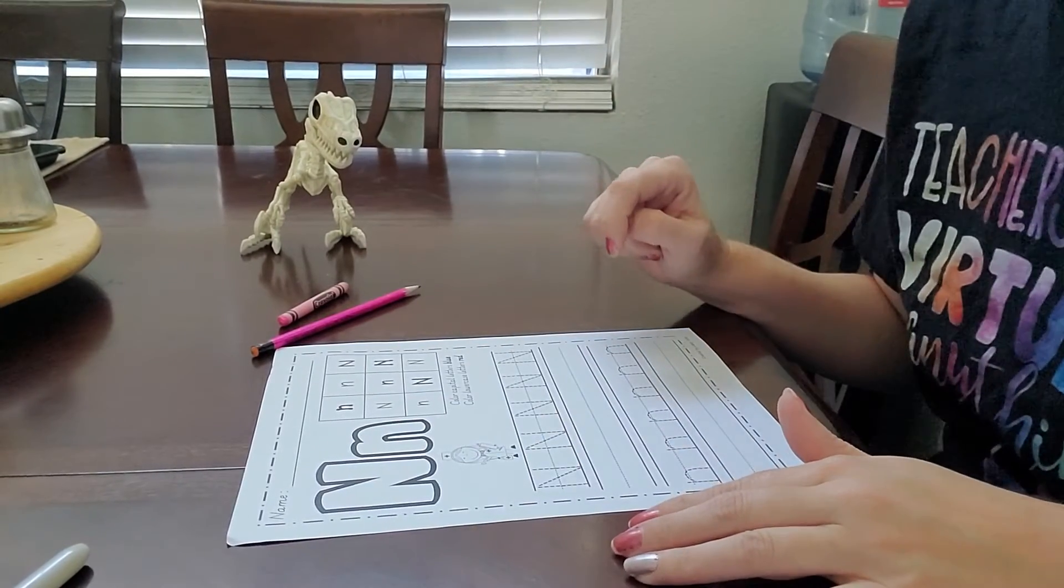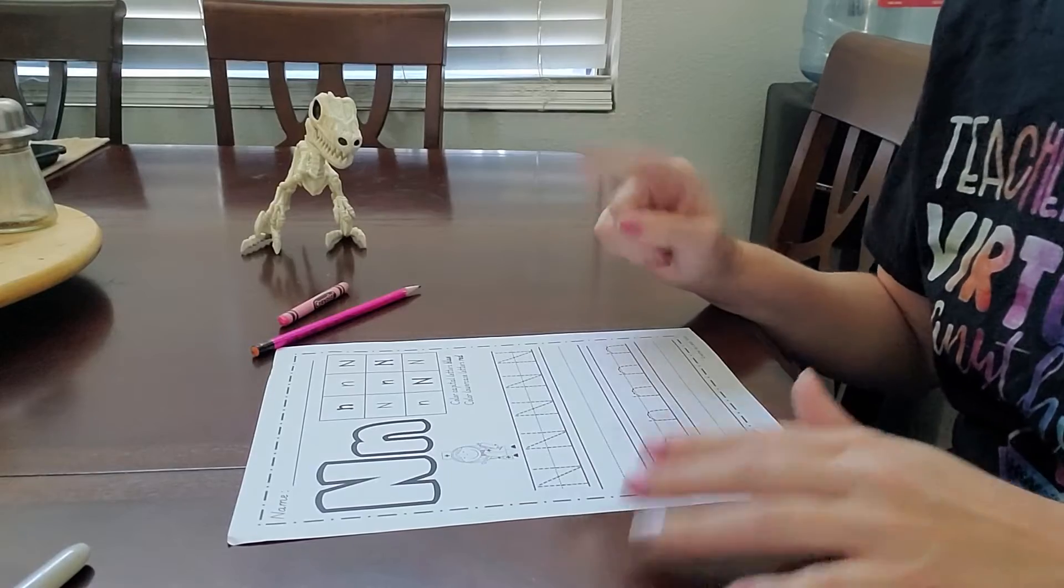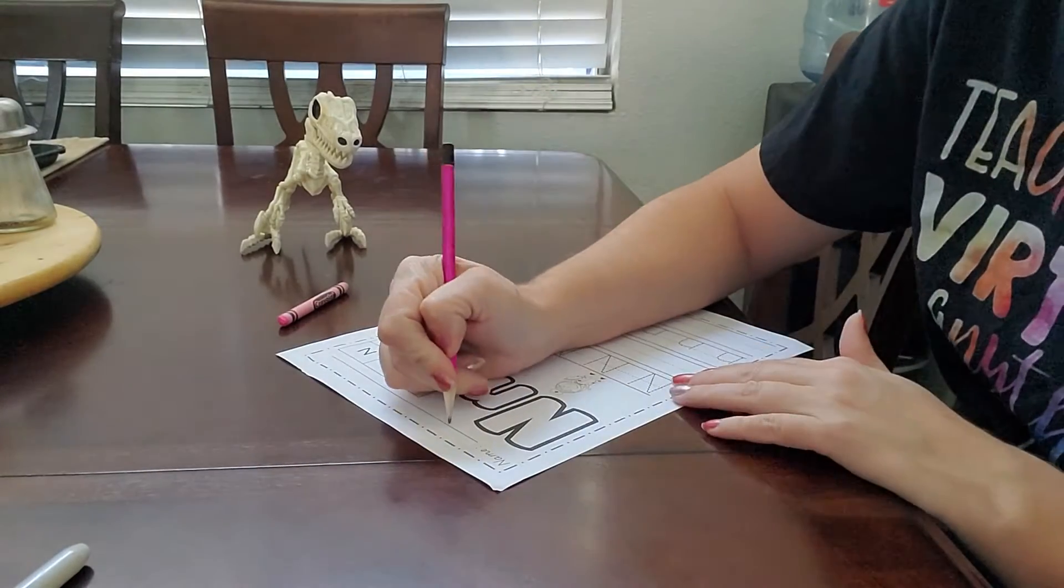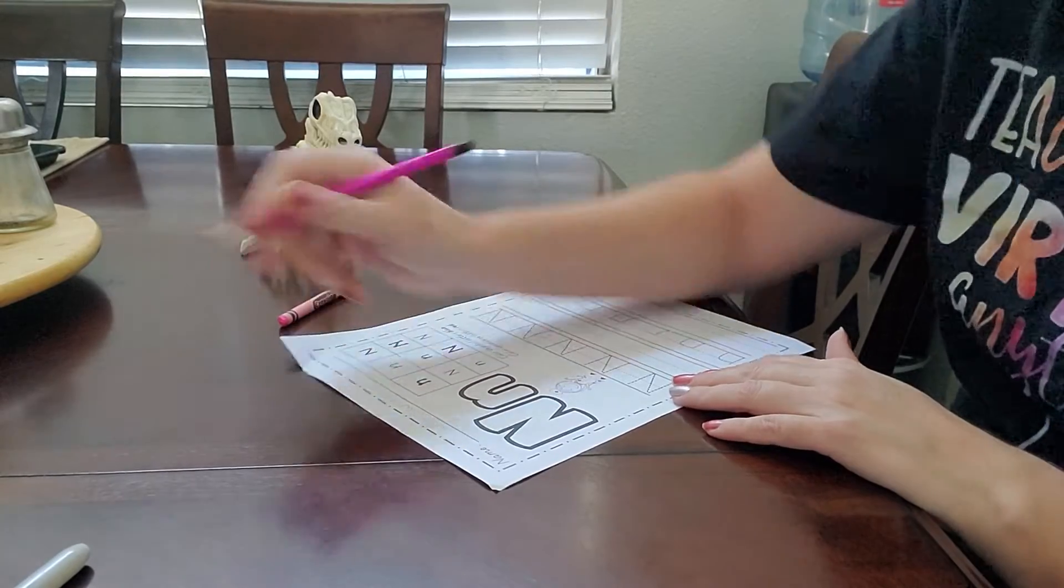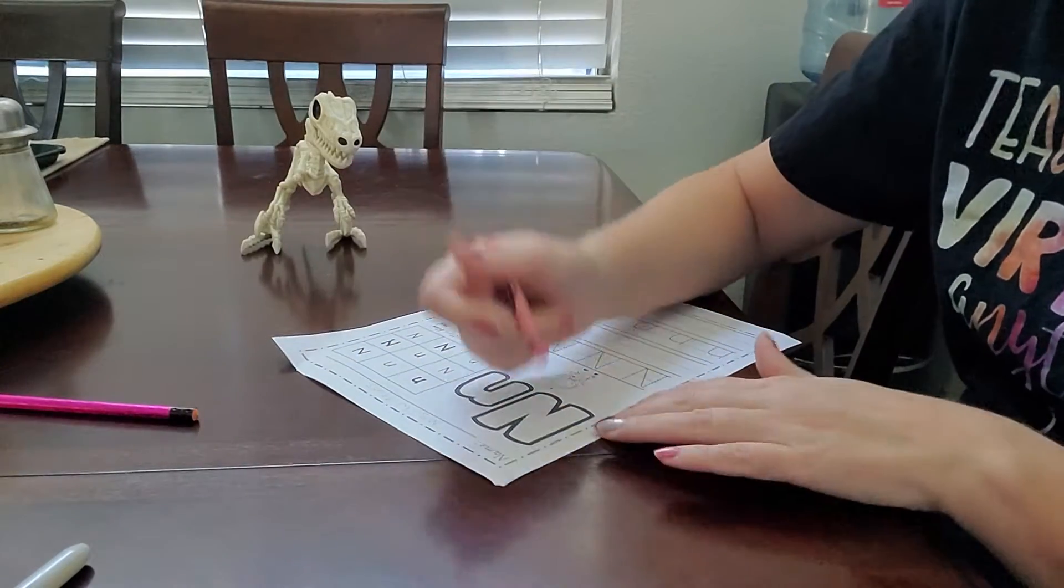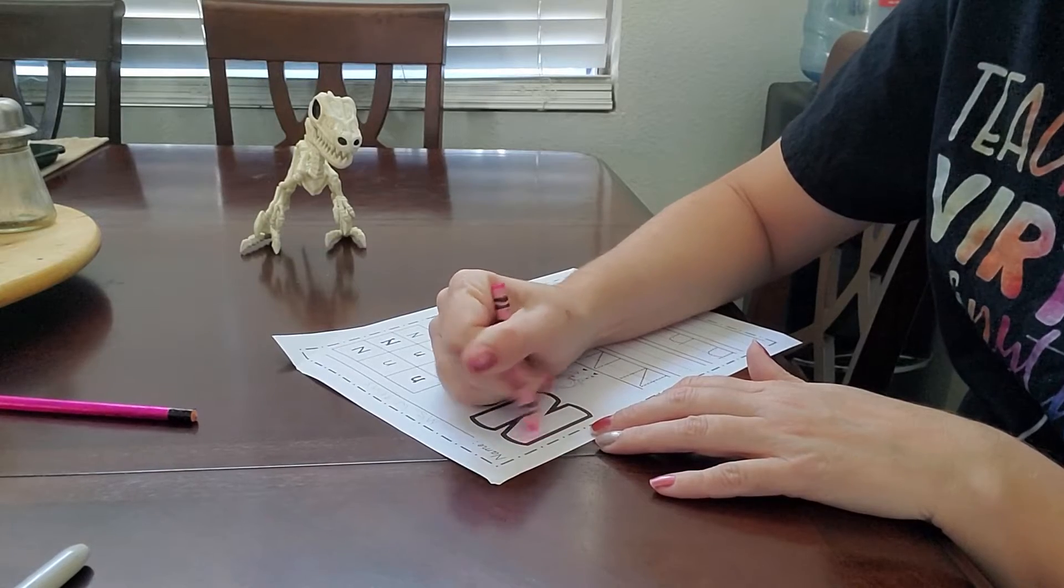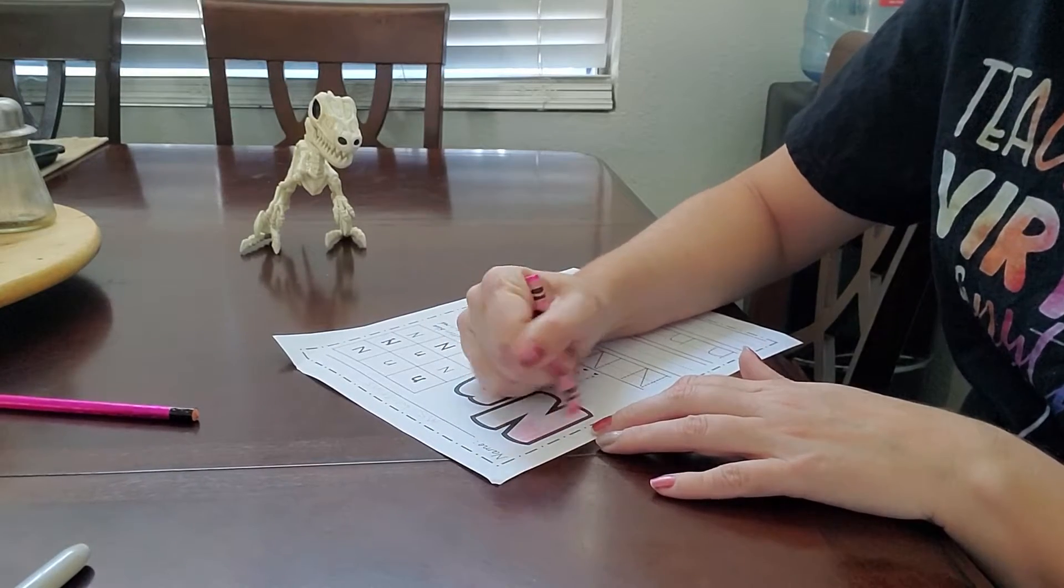The letter N says... So the first thing you're going to do is take your pencil and write your name at the very top. And then let's go ahead and color our uppercase N. And then color your lowercase N.